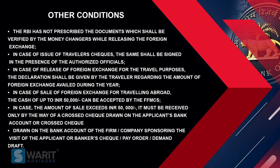In case of sale of foreign exchange for traveling abroad, cash of up to INR 50,000 rupees can be accepted by the FFMCs. In case the amount of sale exceeds 50,000 rupees, it must be received only by way of crossed check drawn on the applicant's bank account, or crossed check drawn on a bank account of the firm or company sponsoring the visit of the applicant, or banker's check, pay order, demand drafts, etc.